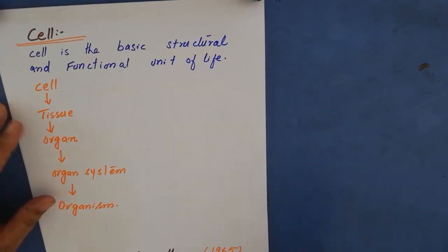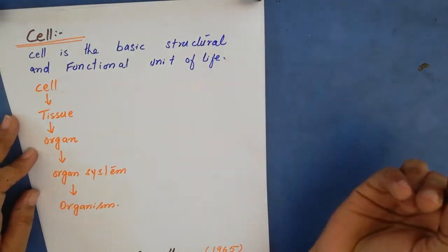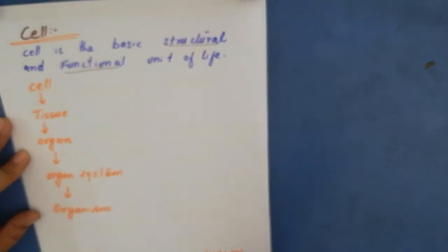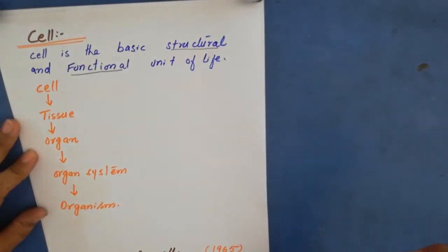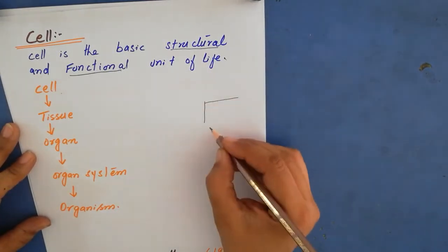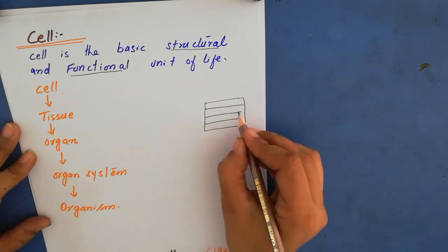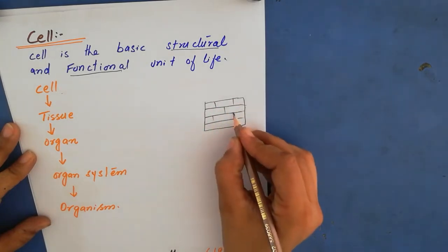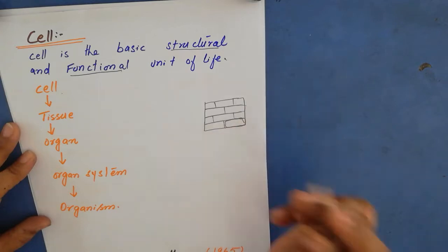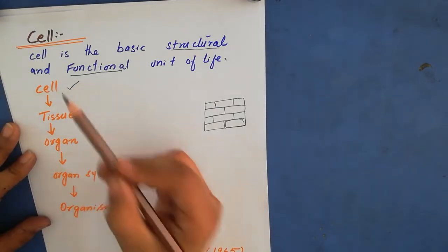First of all, we will define the cell. What is a cell? Cell is the basic structural and functional unit of life. Everything is made up of cells. Let's take the example of a building — a wall is made up of bricks. The basic unit of this wall is a single brick. In the same way, the basic unit of the body of every living organism is the cell.